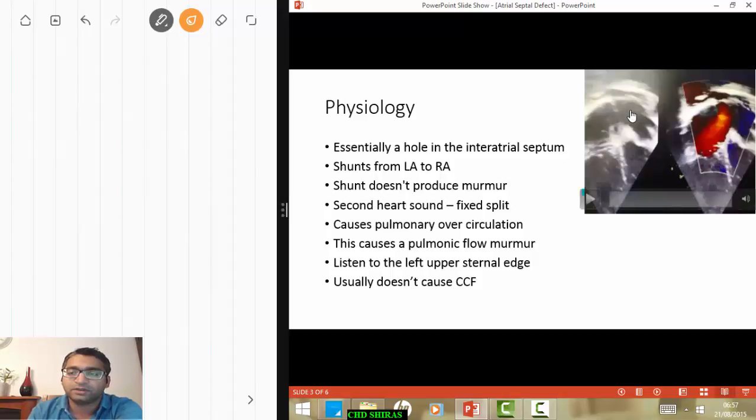The reason for this is the pressure in the left is greater than the pressure on the right. Because the shunt is quite low pressure jet, it's usually not going to produce a murmur. So why do we get a murmur in atrial septal defect?